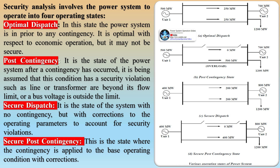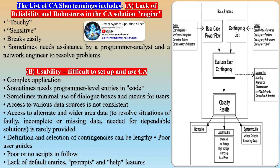Contingency analysis involves the power system operating in four states. One: pre-contingency — the system is in its state prior to any contingency; it is the most cost-effective but may not be the most secure. Two: post-contingency — the state after a contingency has occurred, typically involving security violations such as a line or transformer exceeding flow limits or bus voltage exceeding its limit. Three: security dispatch — the system with no contingency but with operational parameter modifications to account for security violations. Four: secure post-contingency — the state in which the contingency is corrected and applied to the base operating condition.